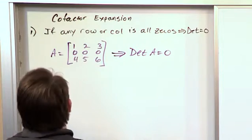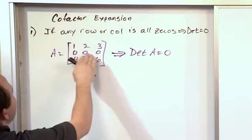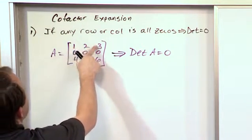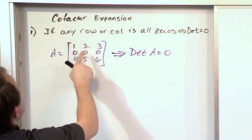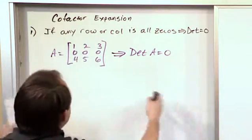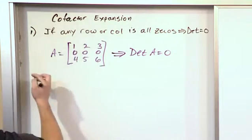It's useful because sometimes you spend a lot of time, if you don't notice that, then you might start expanding the determinant about the first row. And then you wouldn't even realize until the very end that it all happens to become zero. So keep that in mind.